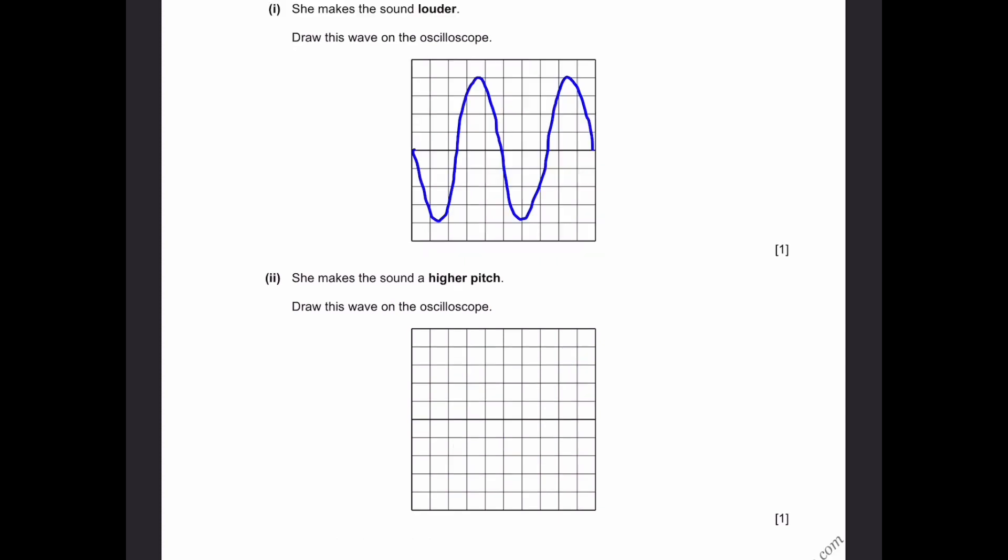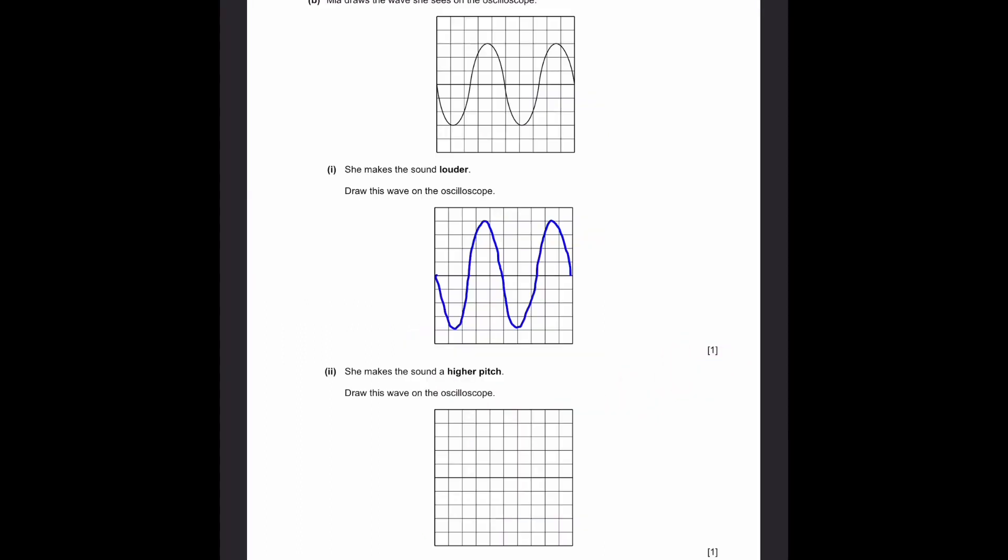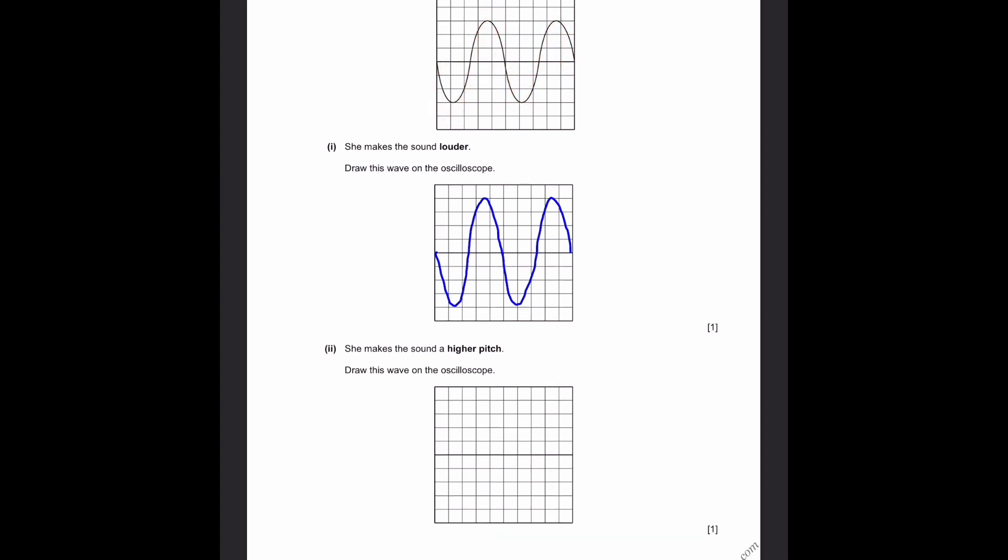Number two. She makes the sound a higher pitch. Draw this wave on the oscilloscope. So if it's higher pitch, that means the frequency increases. And if frequency increases, then we know that there'll be more wavelengths or more full waves in one wavelength. So we can make it the same amplitude like three down and three up. But we need to make it something like this, so that there are more wavelengths in one.